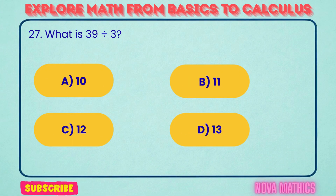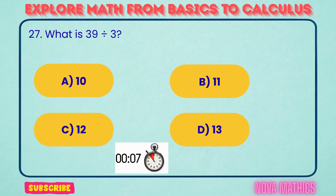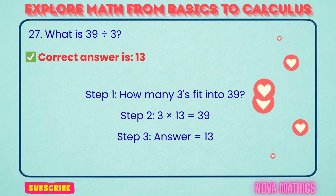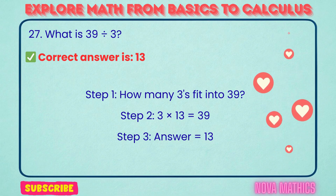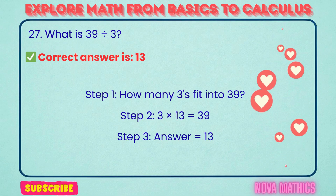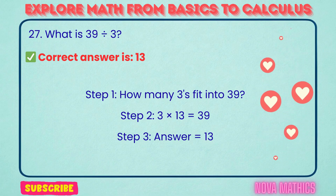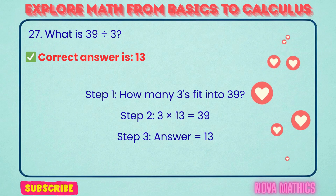27. What is 39 divided by 3? Correct answer is 13. 39 divided by 3 equals 13. We find this because 3 times 13 is 39.